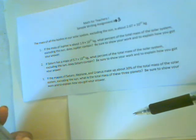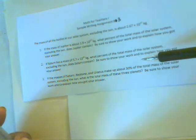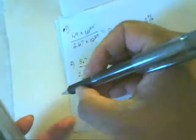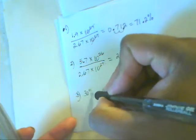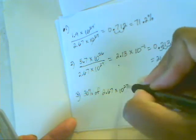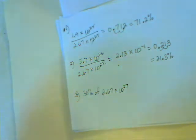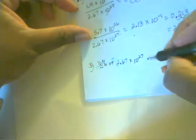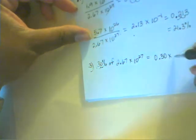Finally, number three: if the masses of Saturn, Neptune, and Uranus make up about 30% of the total mass of the solar system, excluding the sun, what is the total mass of these three planets? Be sure to show your work and explain how you got your answer. In this case, 30% as a decimal will be 0.30, because we drop the percent sign. So we're doing 30% of the total mass, which is 2.67 times 10 to the 27th: 0.30 times 2.67 times 10 to the 27th.